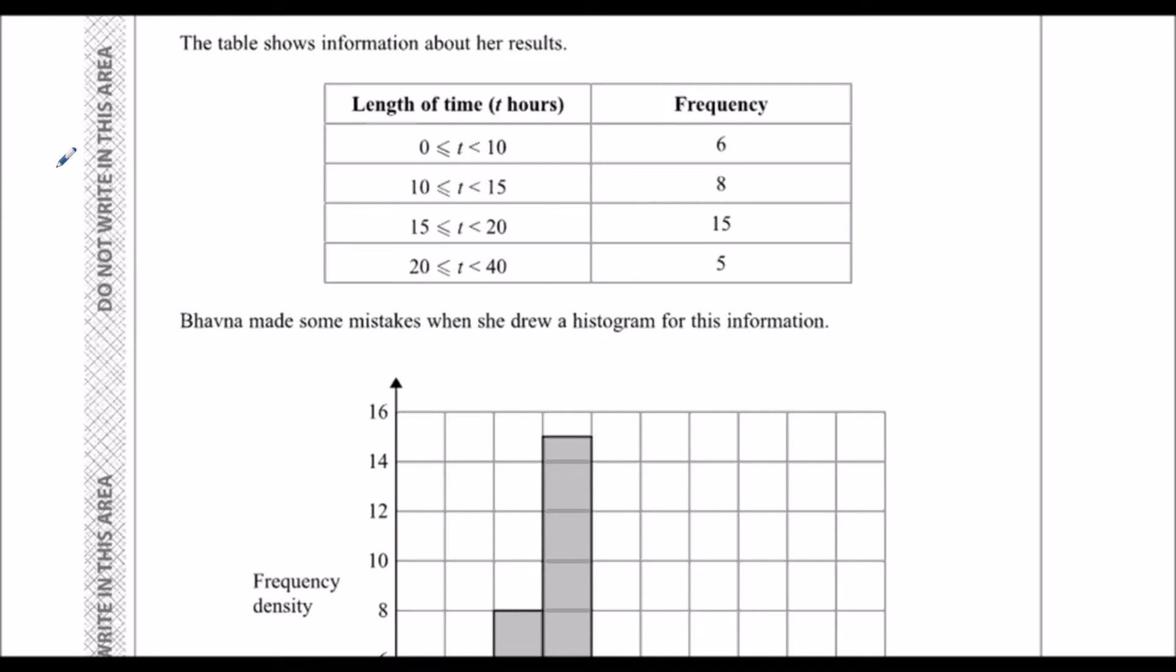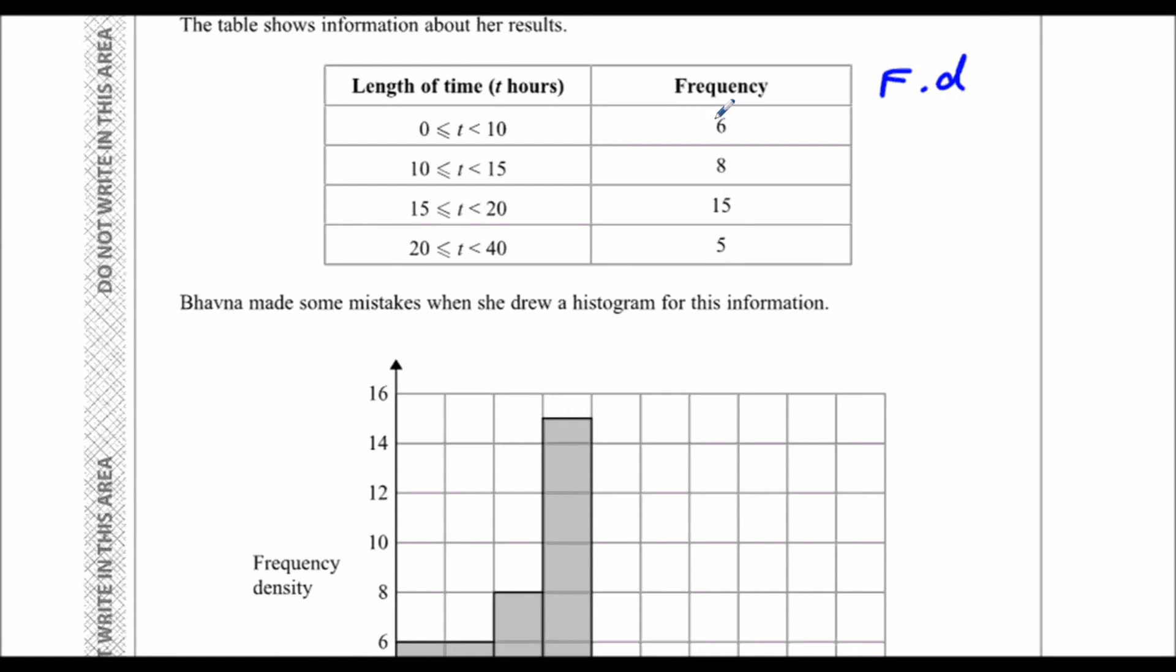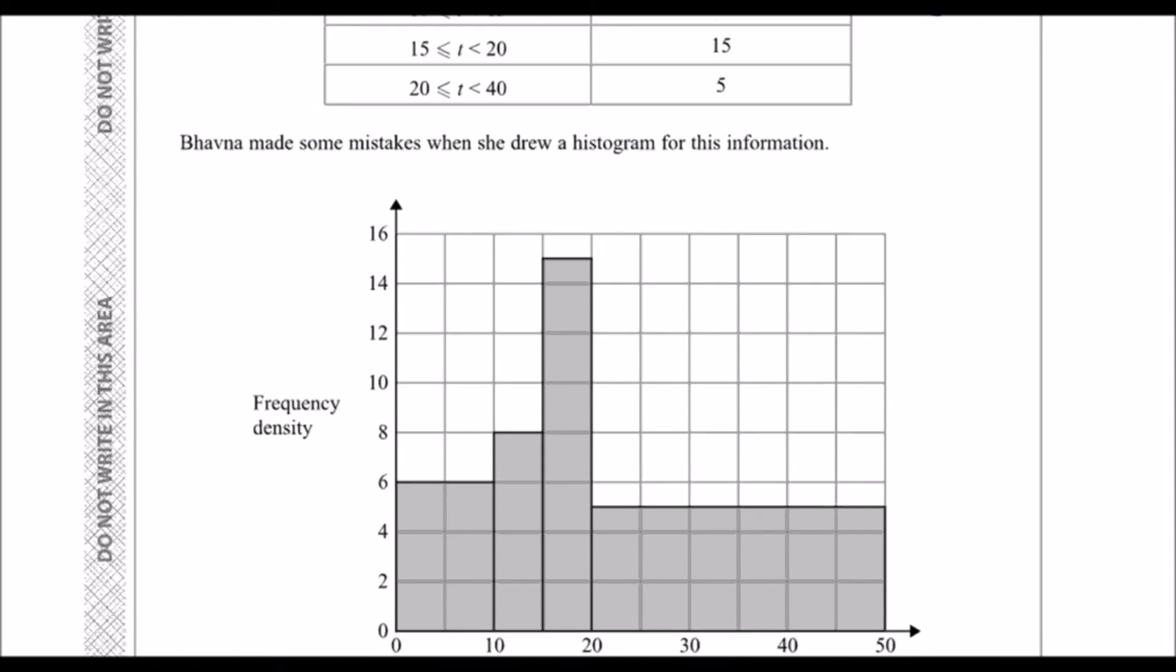Whenever we draw a histogram, we need to work out frequency density, which would be frequency divided by class width. In this case, they haven't done it. So we do 6 divided by 10, this should be 0.6. 8 divided by 5, this should be 1.6. They have not done that at all.